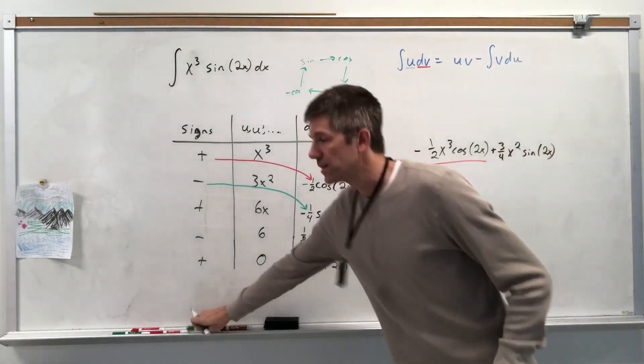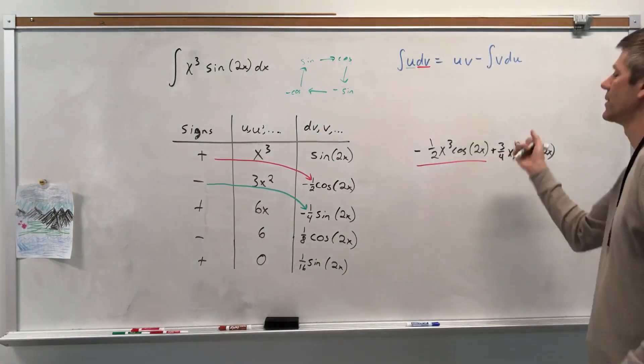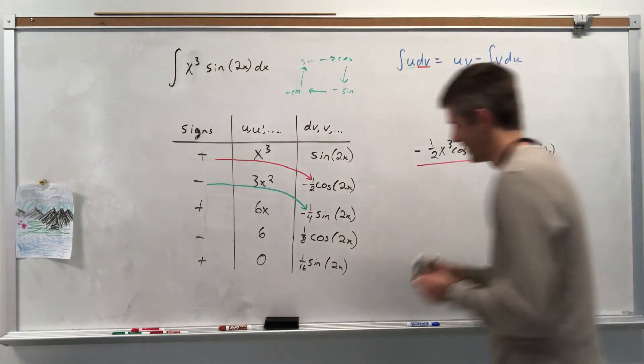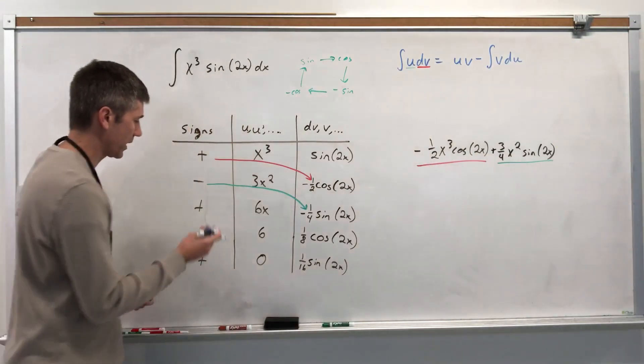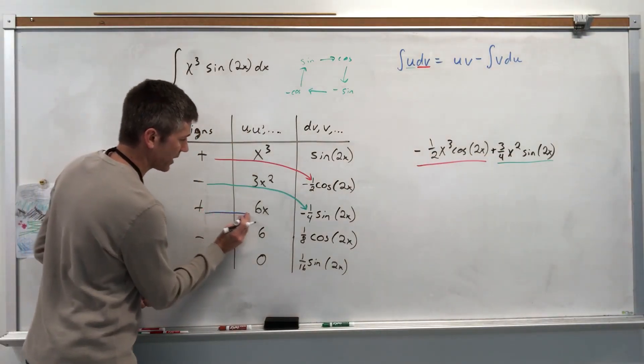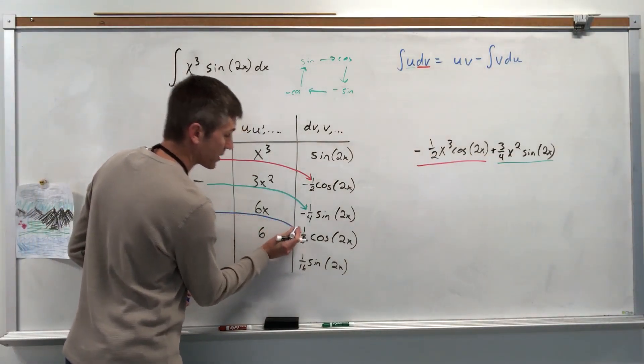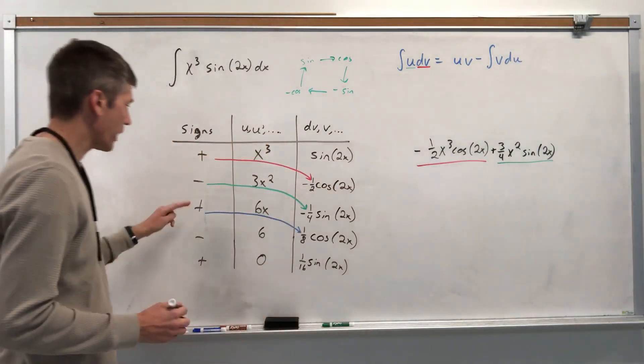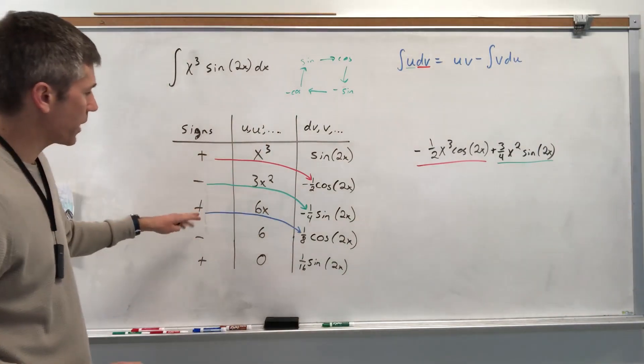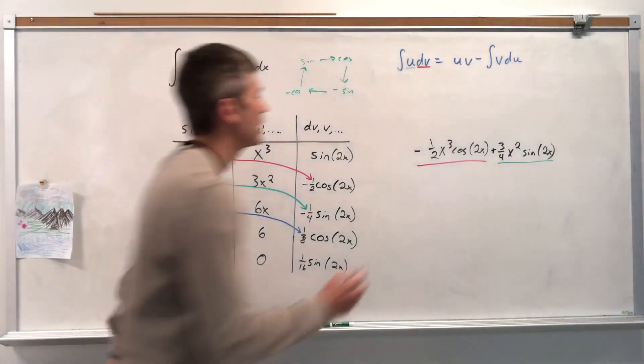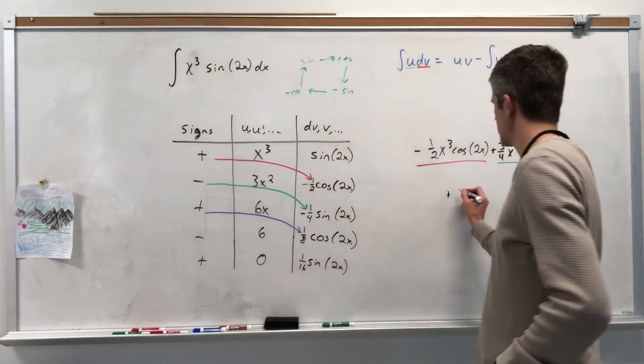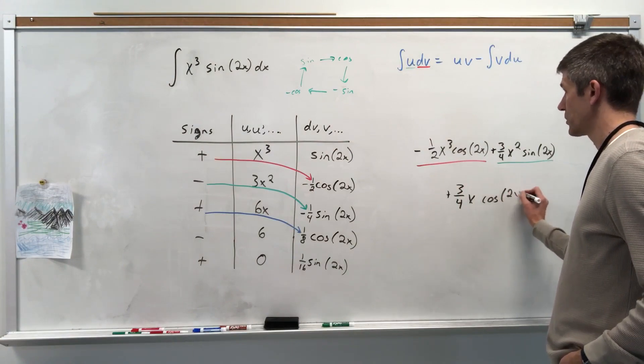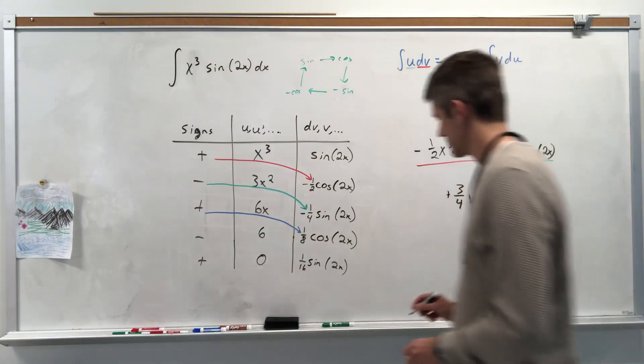Let's use the blue pen. Positive 6x times 1 eighth cosine of 2x. I'm going to bring my answer to the next line over here. So positive 6. Everything's positive. And then 6 eighths, that's three fourths. So plus three fourths x cosine of 2x. Took care of the blue one.